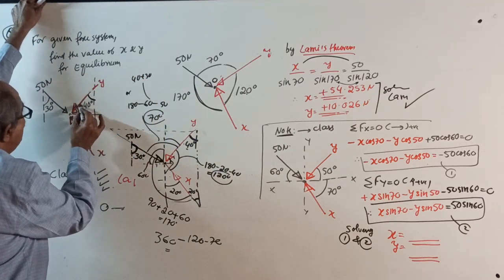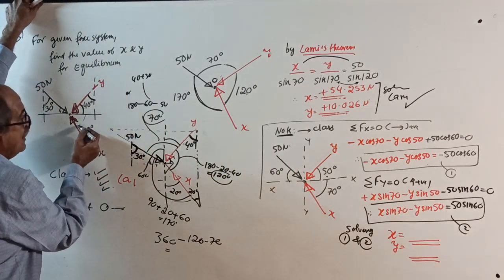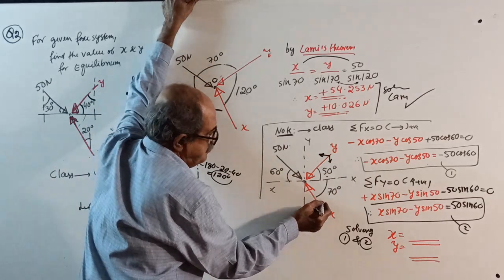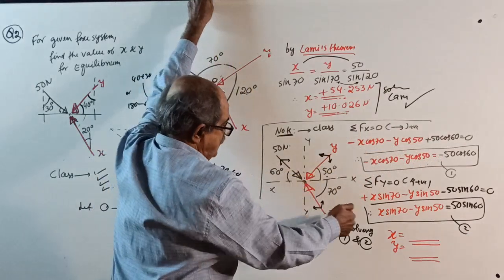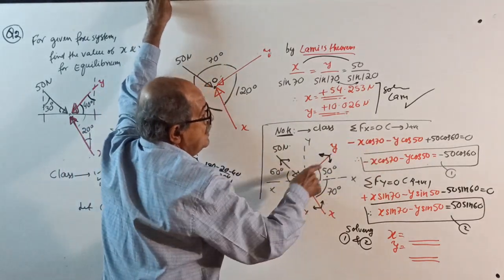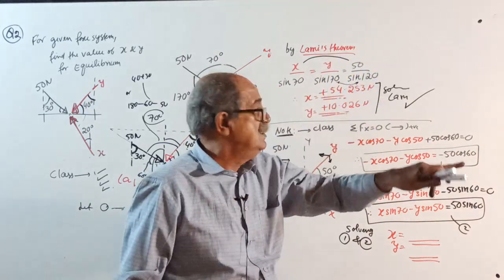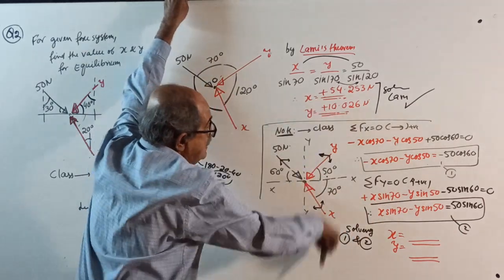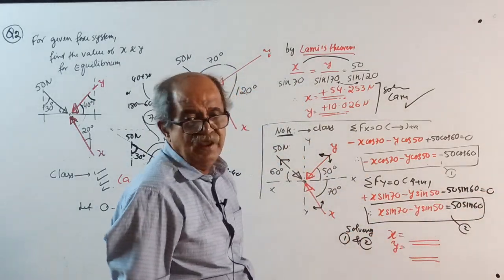For the equilibrium method, resolve forces: if the angle with vertical is 40°, the angle with horizontal is 50°; if 30°, it's 60°; if 20°, it's 70°. Then write Sigma Fx = 0: −X cos70 − Y cos50 + 50 cos60 = 0 — this is equation 1. Sigma Fy = 0: +X sin70 − Y sin50 − 50 sin60 = 0 — this is equation 2. Solve for X and Y.